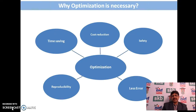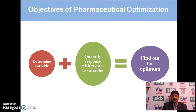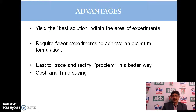Why is optimization necessary? Basically, it helps in cost reduction, safety, less error, time saving, and reproducibility. The basic objective of pharmaceutical optimization is to determine the variable, quantify the response with respect to the variable, and find out the optimum. The advantages are: to yield the best solution within the area of experiment, require fewer experiments to achieve an optimum formulation, easy to trace and rectify problems, and cost and time savings.